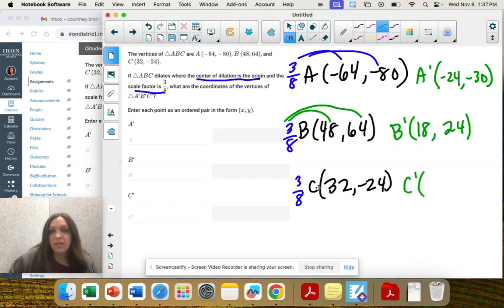C prime, 3 8ths times 32 is 12. 3 8ths times negative 24 is negative 9.